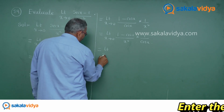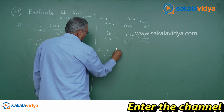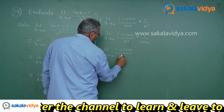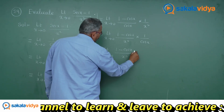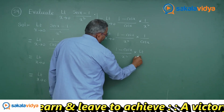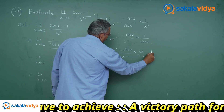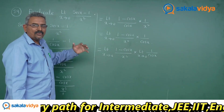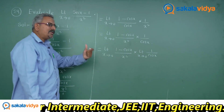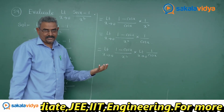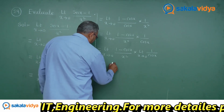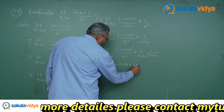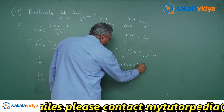This can be rewritten as: limit x tends to 0 of 1 minus cos x by x square, into limit x tends to 0 of 1 by cos x. Now, once again, we need to recall the formula for 1 minus cos x. As from trigonometry, 1 minus cos x is nothing but 2 sin square of x by 2.